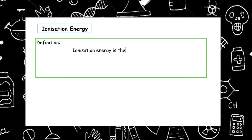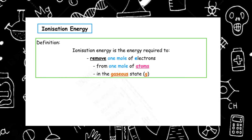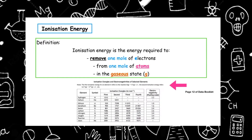Ionization energy is the energy required to remove one mole of electrons from one mole of atoms in the gaseous state. The updated data booklet using page 12 will provide you with the ionization energies of all of the elements that you need to know.